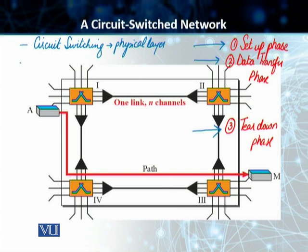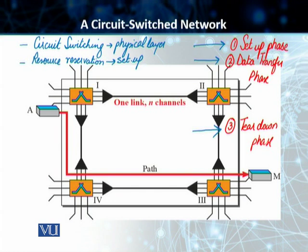The second concept is resource reservation — a very important concept you have to understand. In resource reservation, you do the setup before you start the data transfer. Circuit switch is different from packet switch in this way. In circuit switching, we reserve the resources and set up the connection. Once that connection is established and we receive an acknowledgment from the receiving end, only then are we allowed to send any data.